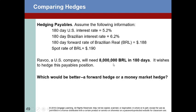RAVCO, a US company, will need 8 million Brazilian reals in 180 days and wishes to hedge this payable position. The 180-day US interest rate is 5.2% — an annual rate applicable to this 180-day period. The Brazilian interest rate is 6.2%. The 180-day forward rate of the real is $0.188 per real, and the current spot rate is $0.19.